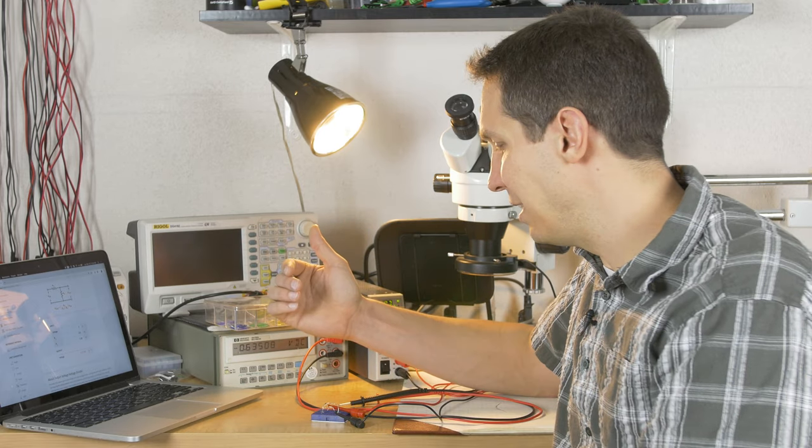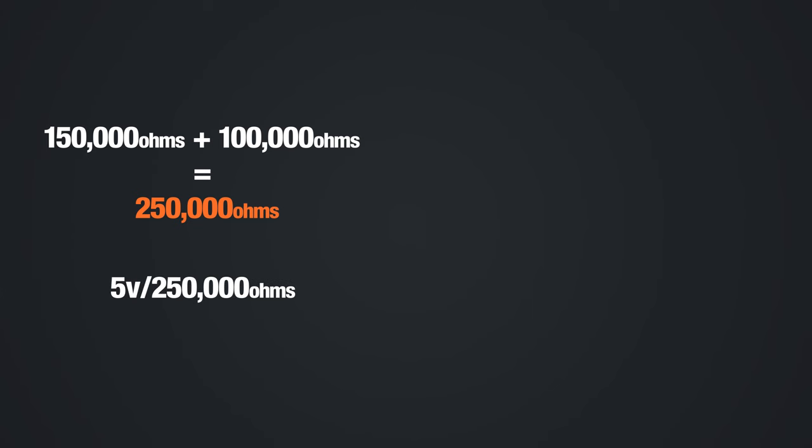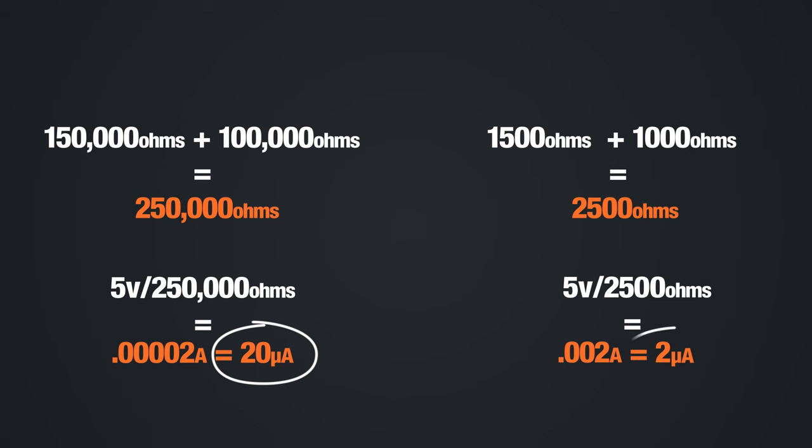The problem with that is, with 150 kilohms and 100 kilohms in series, you're getting 250 kilohms. So 5 volts over 250 kilohms puts you at about 20 microamps current. You take both of those and you drop them down by two orders of magnitude, and your current then goes up by two orders of magnitude. So instead of 20 microamps, you're going to be getting more like 2 milliamps.